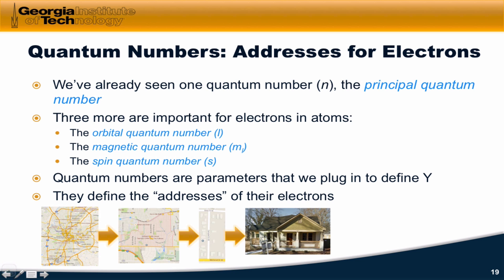Quantum numbers kind of define the address of the electrons, right? So we can think of, for example, the principal quantum number n as defining the city we live in, say the city of Atlanta.